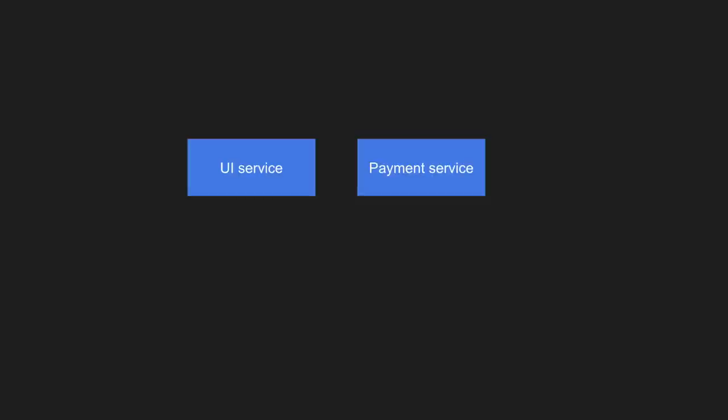The moment two different services are communicating with each other, the first thing to consider is transactionality. A transaction is a single unit of work performed within a system — it could be business logic, persisting to a database, or calling another service. Transactionality means making sure your transaction is completed successfully without any side effects. For example, if the payment service goes down, the UI service needs to ensure the transaction remains intact.